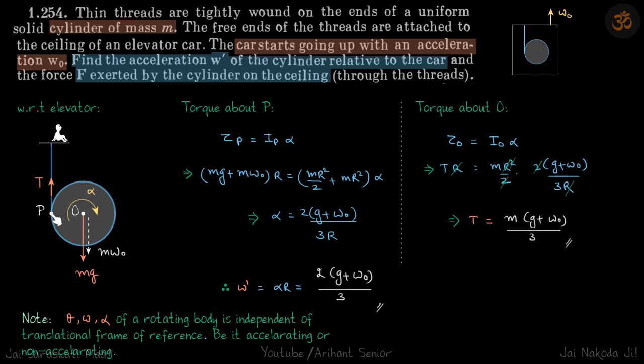Let's write torque about point P so we don't need to worry about tension. Torque about the point P, tau P is equal to I P alpha, and torque is Mg plus M W naught into R, which is equal to M R square by 2 plus M R square into alpha, which gives the value of alpha.